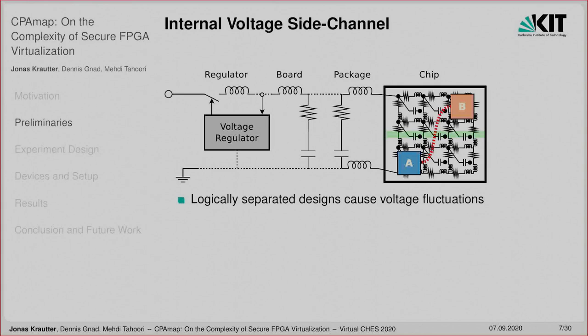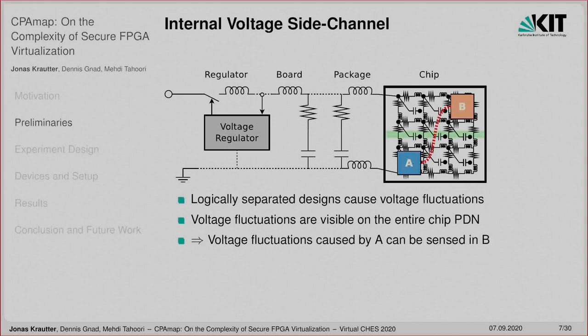First, I want to explain the mechanisms behind chip-internal voltage side-channel attacks. Different designs are placed on the same chip, and while there is no signal connection between them, they can still cause voltage fluctuations. Because of the shared power supply up to the voltage regulator, and especially because of the shared PDN (power delivery network) on the chip, the voltage fluctuations are visible on the entire power delivery network. The voltage fluctuations caused by a victim design in partition A can be sensed in partition B, enabling side channels despite the logical separation of the different designs.